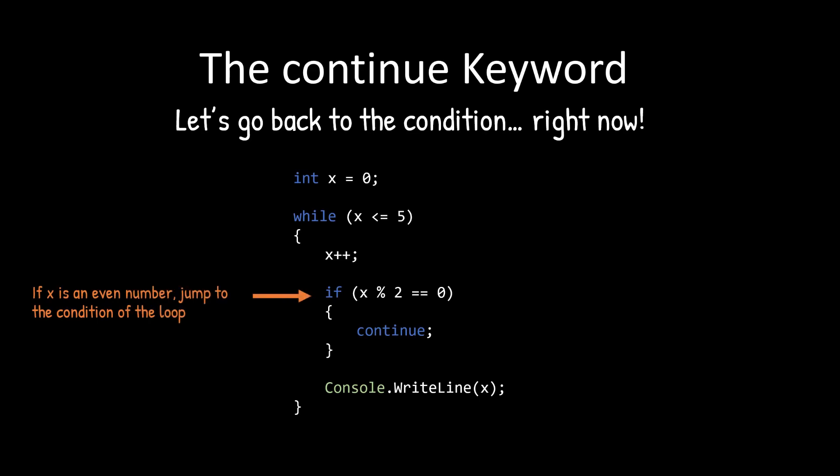Now notice our if statement here. It reads that if the value of x mod two is zero, that means if x is an even number, then we want to continue, which means skip the rest of the code block of which the only statement left in the code block is a console dot write line. So it's going to skip printing numbers that are even.